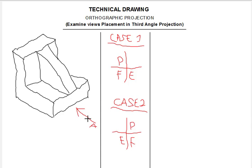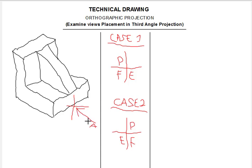When the question asks you to draw the views in first angle projection, we draw a plus sign at the tail end of the given arrow — the direction at which we are viewing the component. That's what we learned in the previous lesson. In the case of third angle projection, what we do is draw the plus sign in front of the arrow head. The plus sign represents the quadrant.